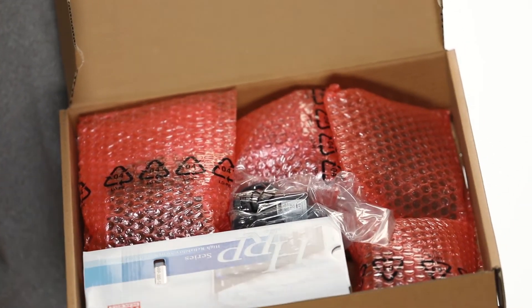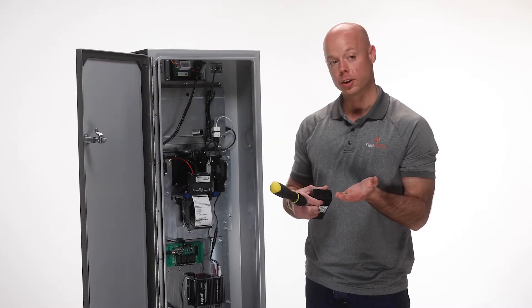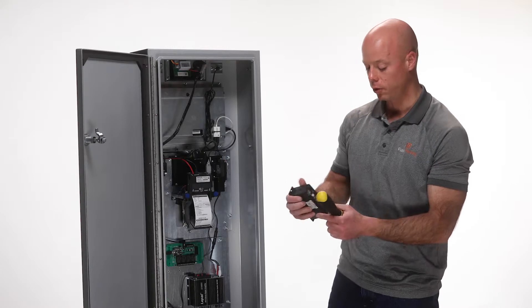Once you have your new replacement USB hub from your FlashCare maintenance kit, using the two screws that held in the original piece, replace the unit in the kiosk.